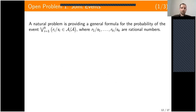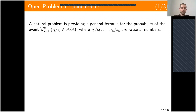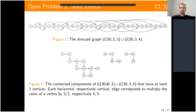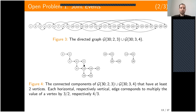However, if the rational numbers generate a group of rank greater than one, then the connected components are isomorphic to a subgraph of the r-dimensional grid graph. For example, for two rational numbers 2/3 and 3/4, the connected components have some loops, making them more difficult to classify and study.